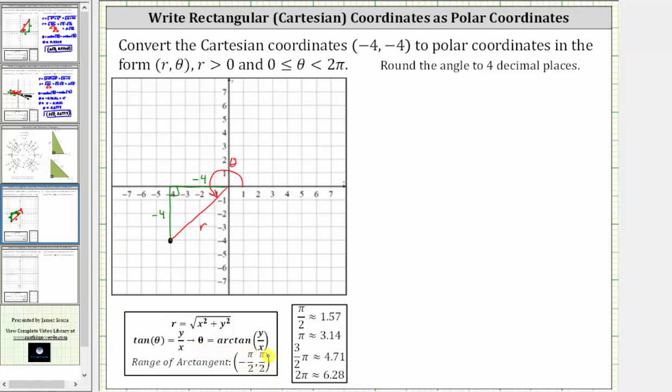So the arctangent function value we get from the calculator is not going to give us the angle we want in the third quadrant, but it will give us the reference angle that we can use to determine the angle we want in the third quadrant.